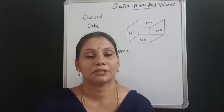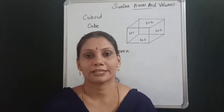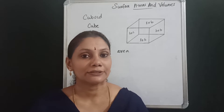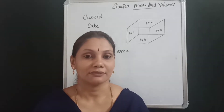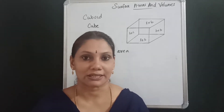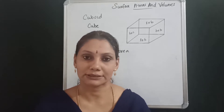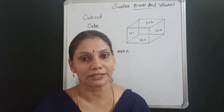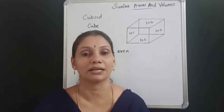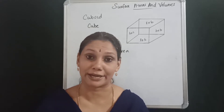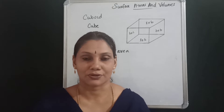Now we are going to start surface area and volume. You will see a rectangle and square. We will learn a circle in the middle, a rectangle with L and B, a square with side A, and a circle with pi r.